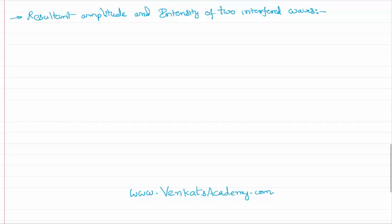Hello everyone, welcome to this video lesson. We are now dealing with the topic wave optics, where our subtopic is interference. Interference is the combination of two waves. What happens when two waves are combined together — what will be their resultant amplitude and what will be their resultant intensity — is the point of this video lesson.